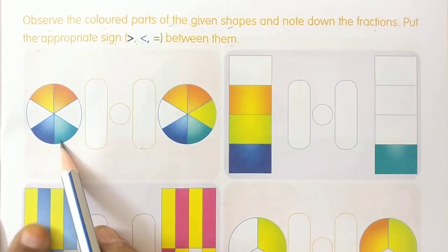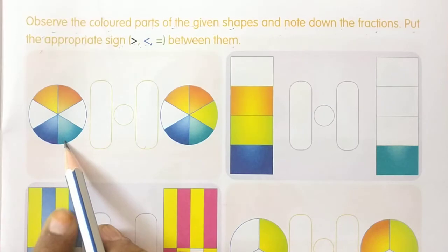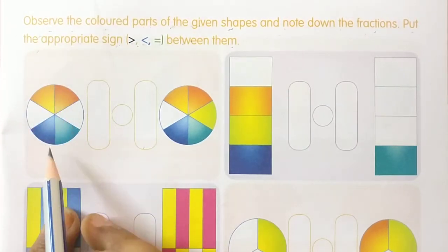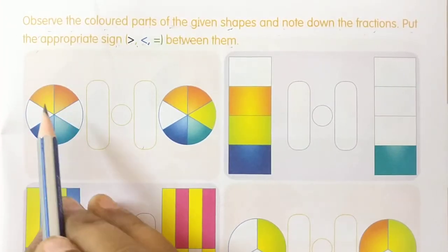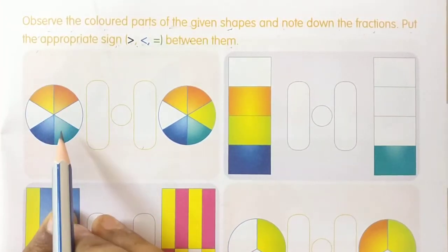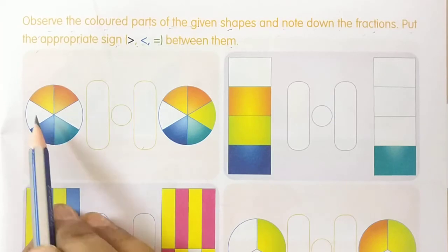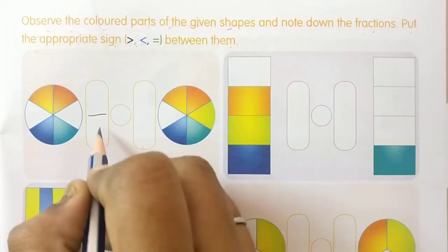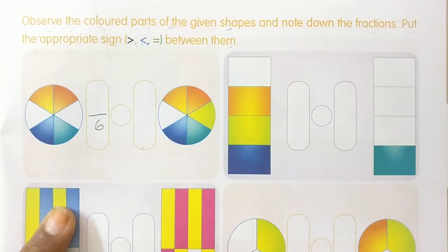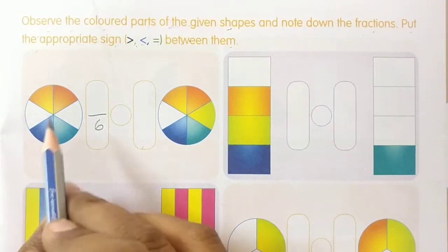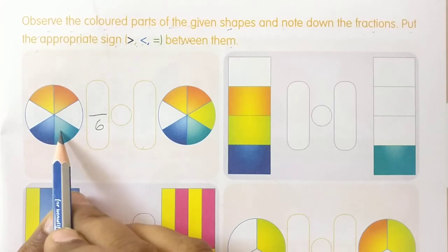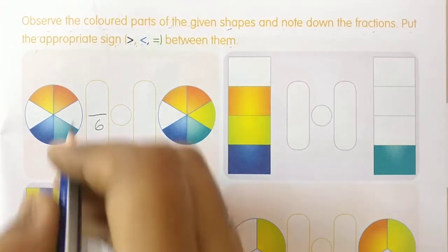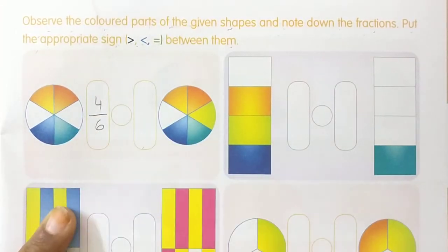First see the first shape. Count how many parts: 1, 2, 3, 4, 5, 6. Total 6 parts. Now how many are colored? 1, 2, 3, 4. So 4 are colored. So the fraction is 4 by 6.